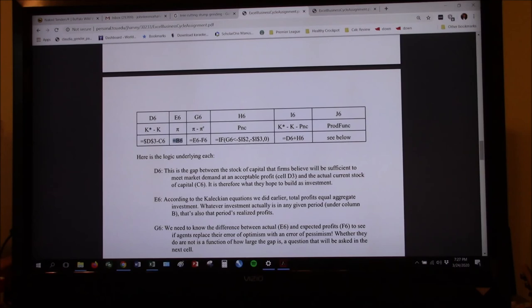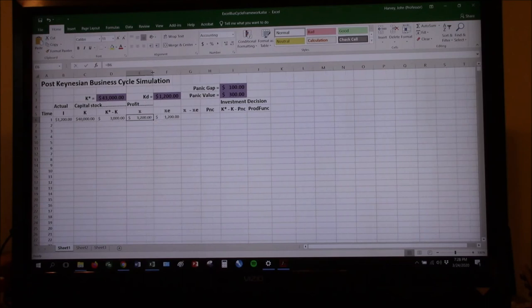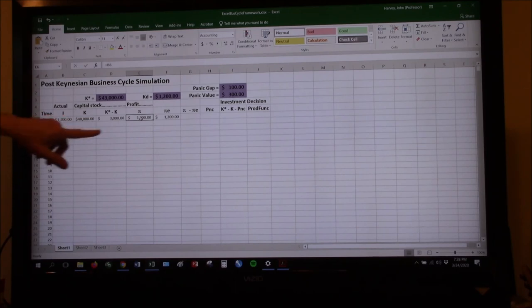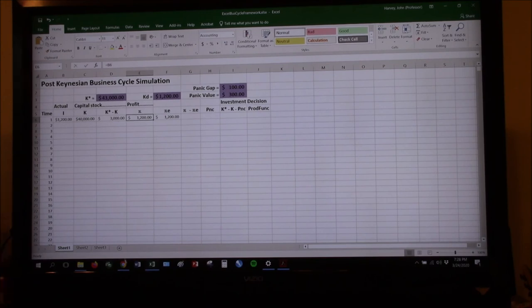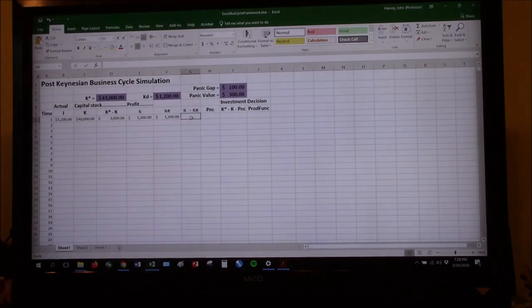So now let's go in for the next one. And this is actual profits. Control C. This is going to go in E6. 1,200. Remember that Kalecki says that profits in any period will be equal to investment in that period. So all this cell right here is, is B6. It's whatever investment was. So this cell over here will always be identical to this cell over here, coming from that Kaleckian equation we went through in the previous video.